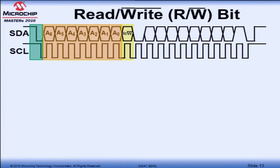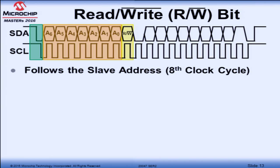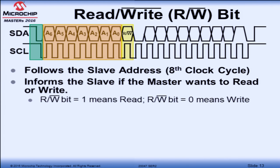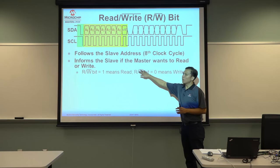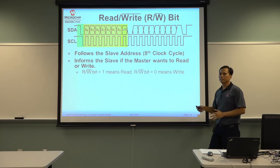The next part of the waveform is the read-write bit, and it always follows the 7-bit slave address. The read-write bit plus the 7-bit slave address combine to become the address byte, which is 8 bits. It informs the slave if the master wants to write to it or read from it. It always occurs on the 8th clock cycle. If the read-write bit is 1, the master wants to read; if it's 0, the master wants to write. It is easier to remember because you have the bar on the W — zero means write, one means read.